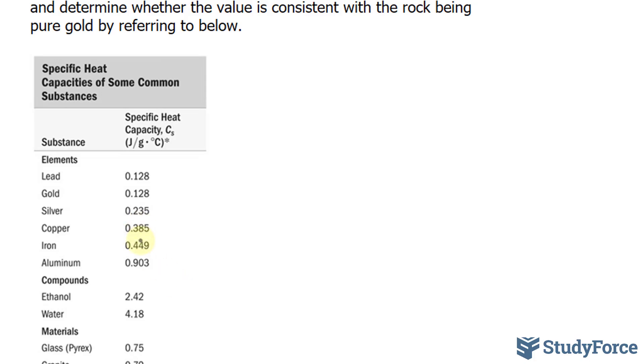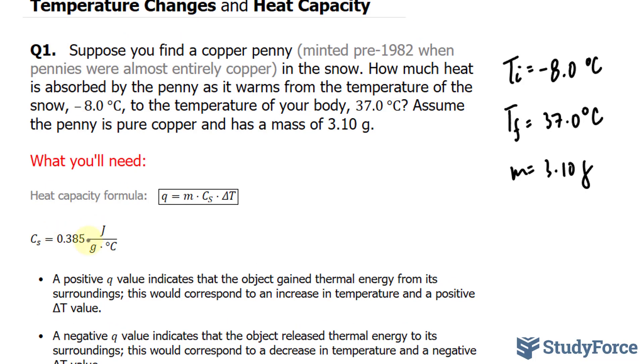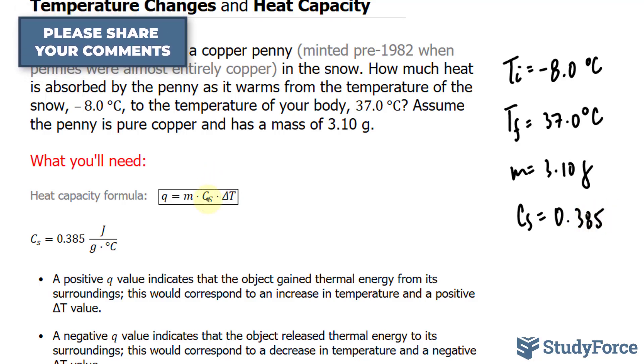In our case, it's copper, so we'll be using 0.385, and that's shown over here. C sub S is 0.385, and you'll also need to multiply that by the difference of the temperature, delta T. To do that, we'll just take the final minus the original. Let's go ahead and figure this out.